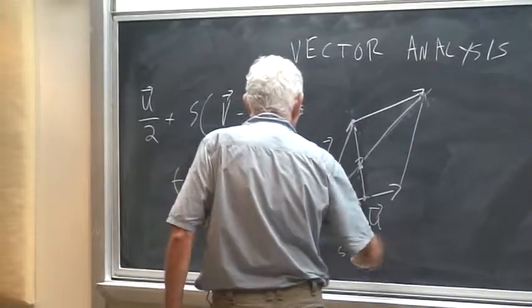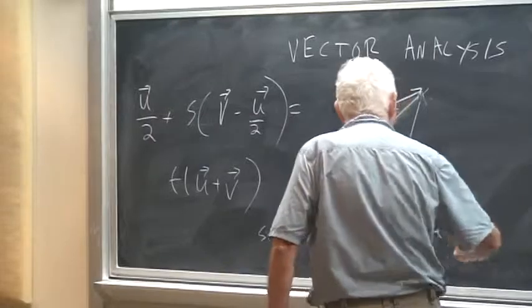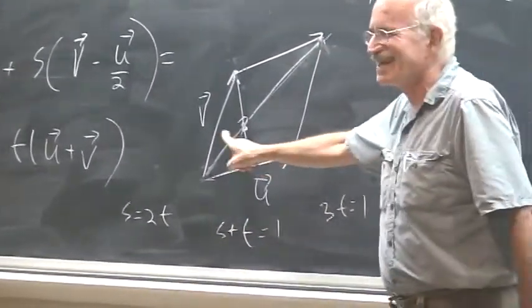And it turns out that S equals 2T, and S plus T equals 1, so 3T equals 1, and T equals 1 third. So, it's a trisection.